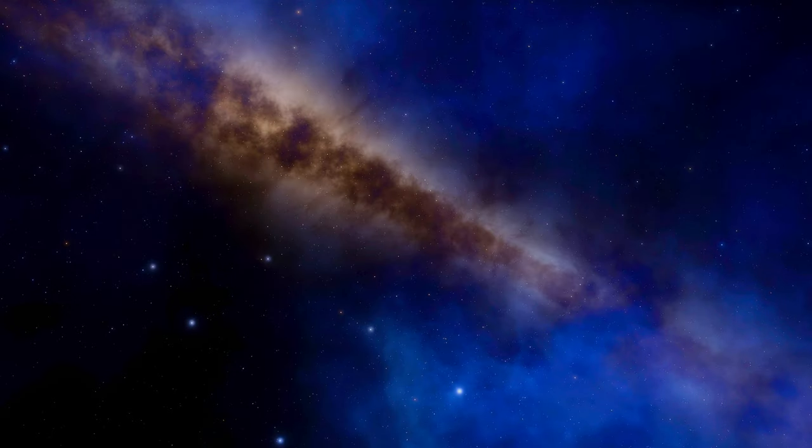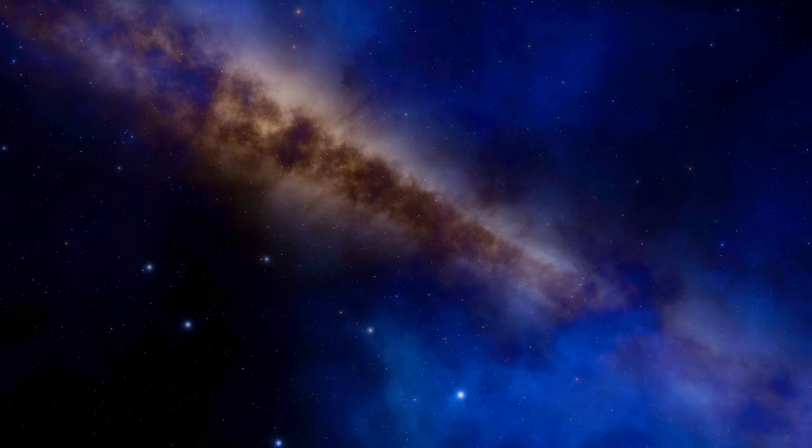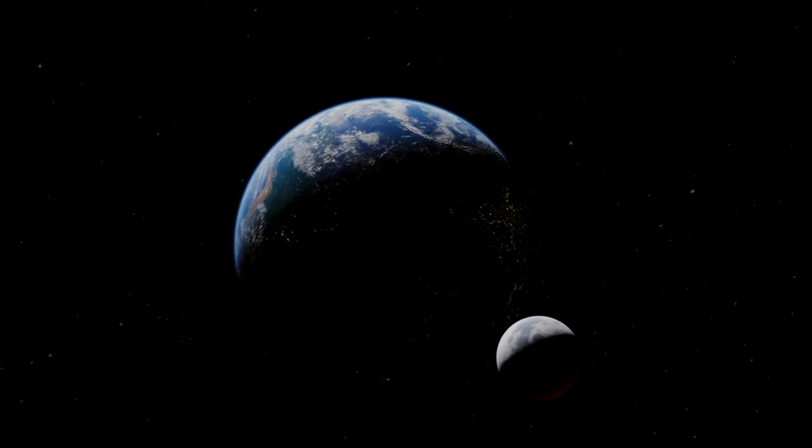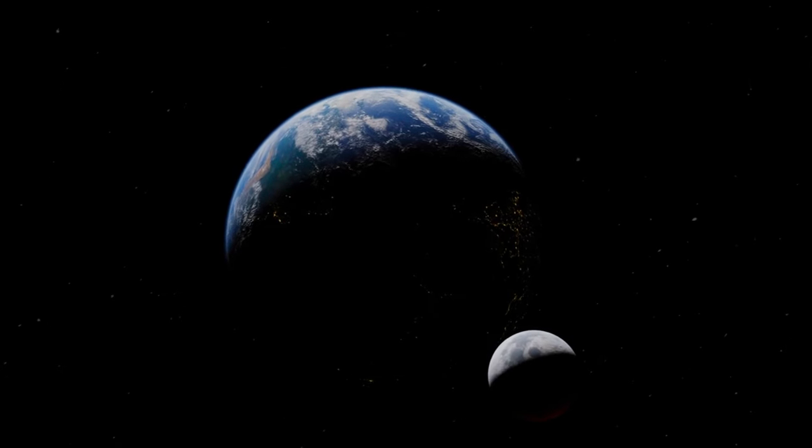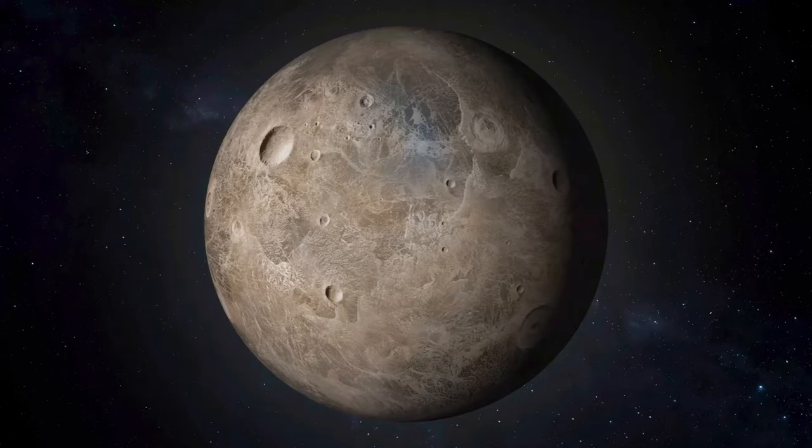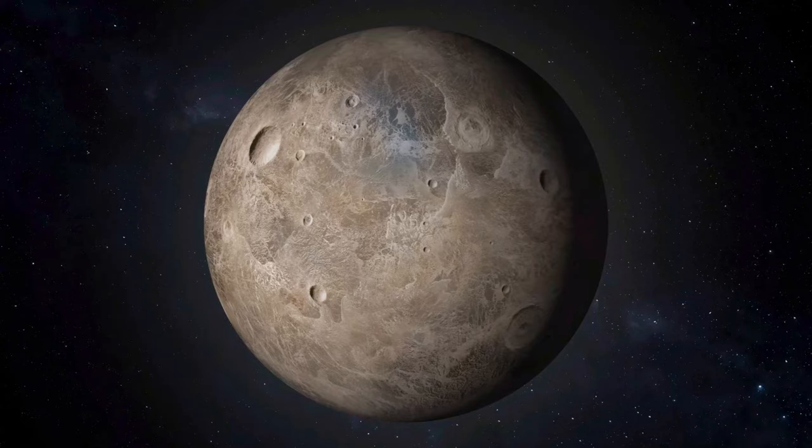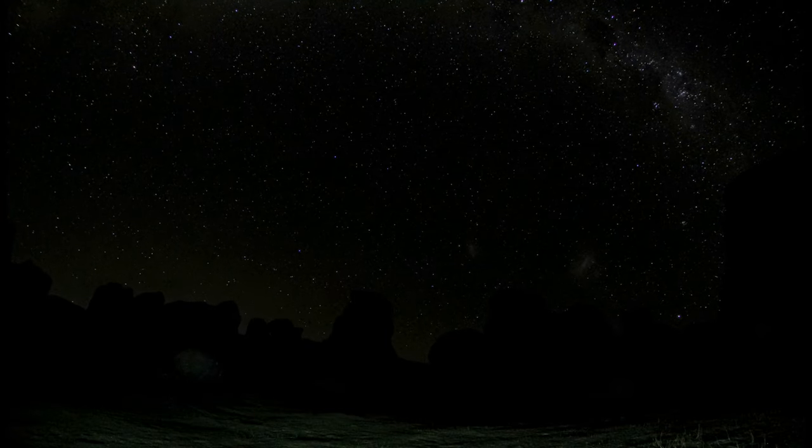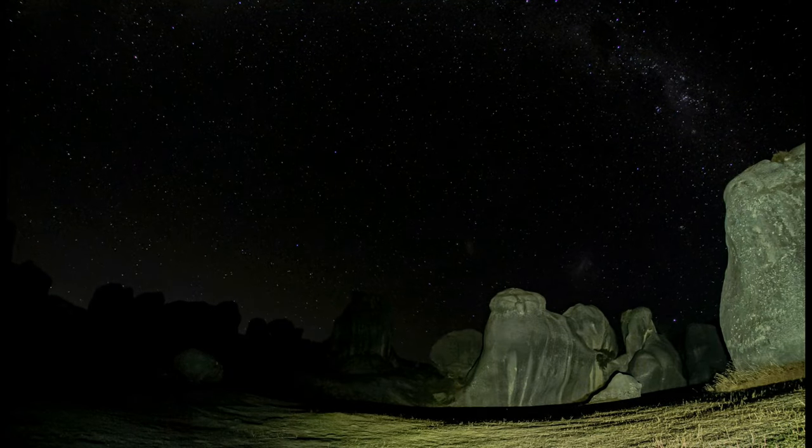Tilted on its side, Uranus experiences extreme seasonal changes. It's surrounded by a system of thin, dark rings and numerous moons. The windiest planet in our solar system, Neptune, is known for its striking blue color and dynamic atmosphere, including the great dark spot.